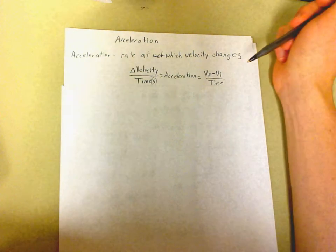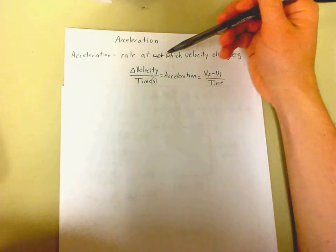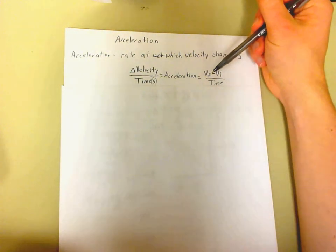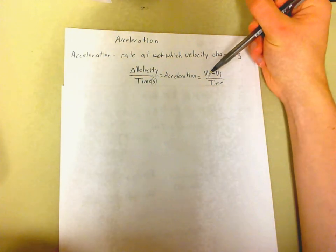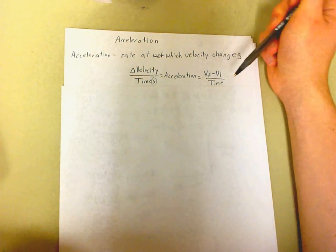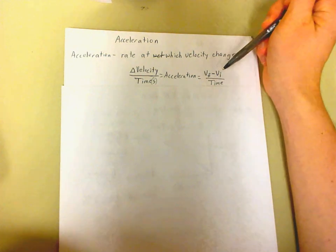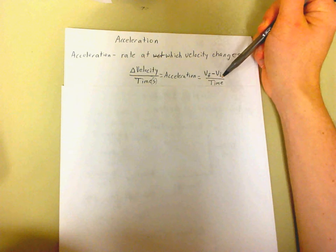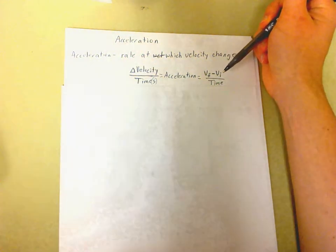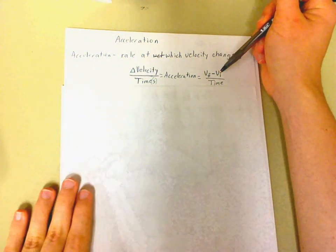And then how we find our change in velocity is that we take our final velocity, which VF stands for final velocity. The little f is in subscript as final. And we subtract that by our initial velocity, which is capital V and our little i in subscript, which is initial. And then we divide our time by that.